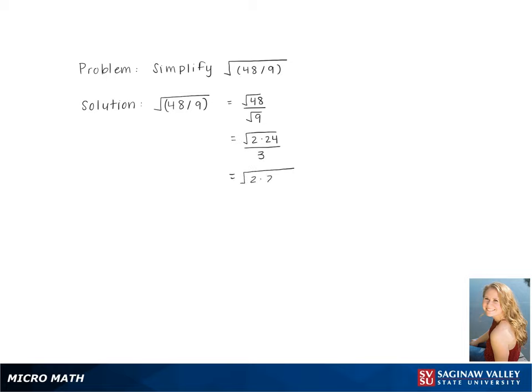Back to the numerator, we break it down even further, giving us 2 times 2 times 12 over 3. Continuing this, we pull out the pair of 2s, and on the inside, we get a 6 times 2 over 3.